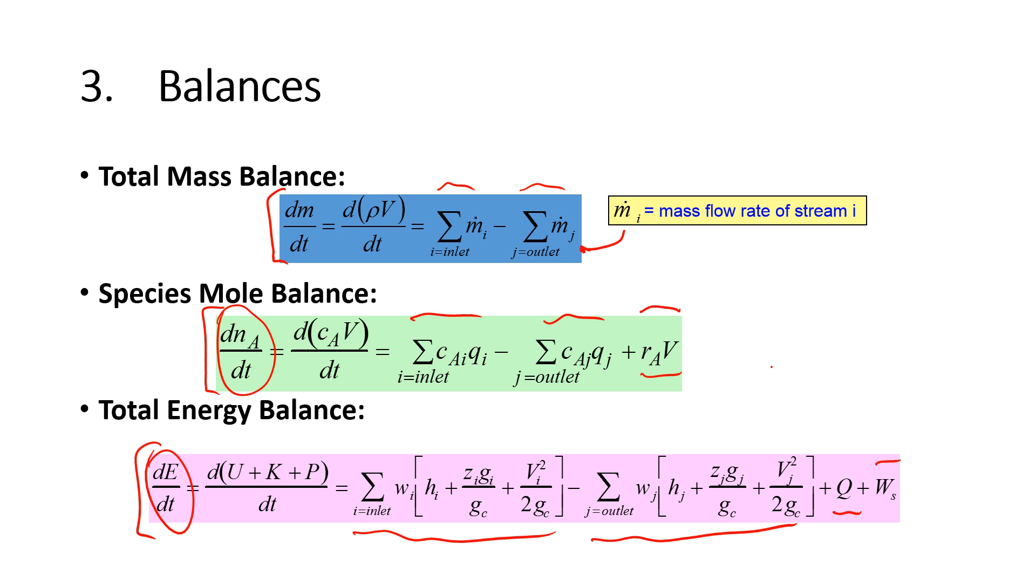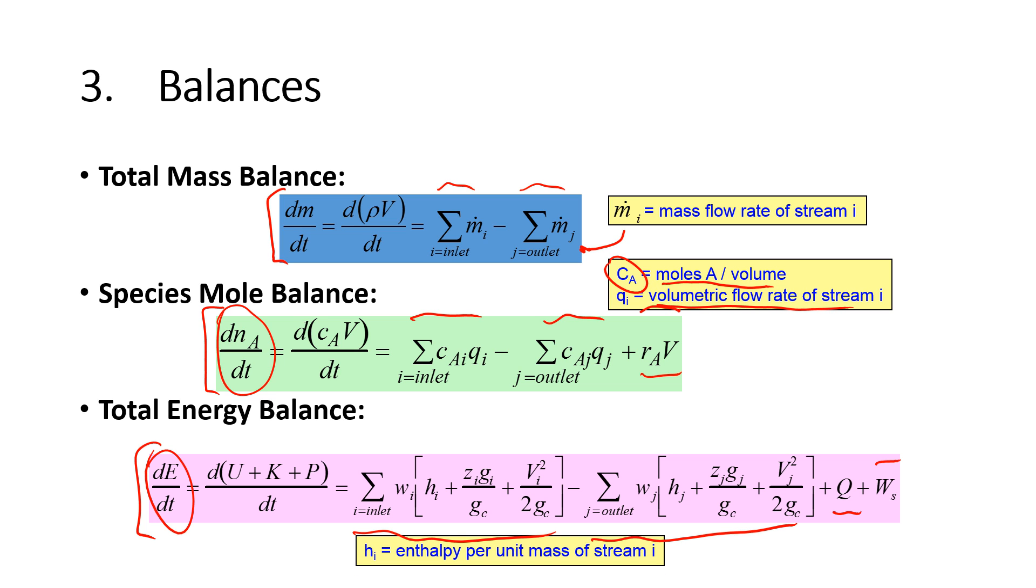Some of this notation is covered in the textbook if you need additional explanation on the different symbols. C sub A is moles of A per volume, and then Q is the volumetric flow of stream i. H sub i is the enthalpy per unit mass of stream i.